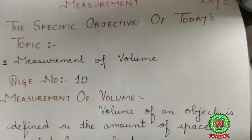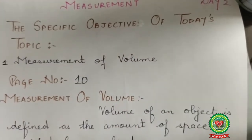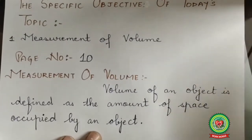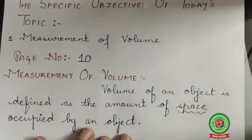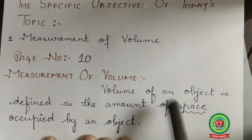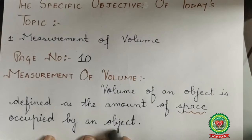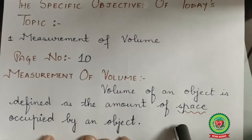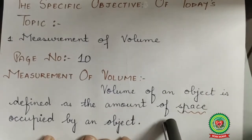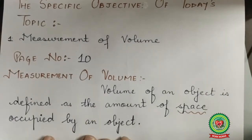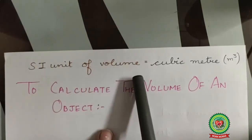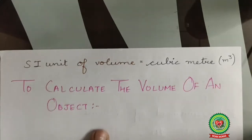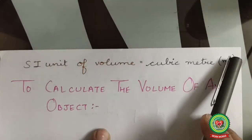Now, what is volume? Volume of an object is defined as the amount of space occupied by an object. In area we covered the amount of surface covered by an object. In volume we will look at the amount of space occupied by an object. The SI unit of volume is cubic meter, denoted by m³, and generally called meter cube.